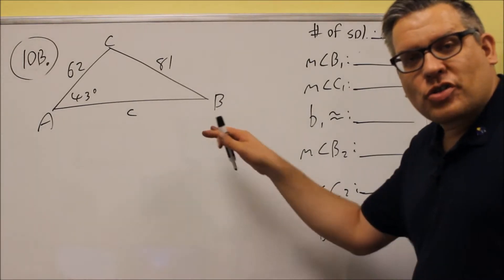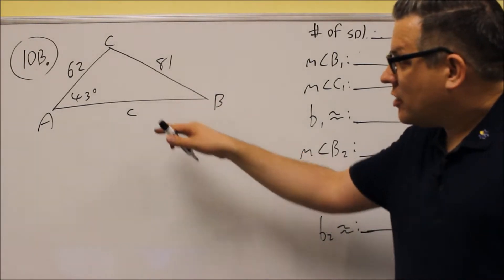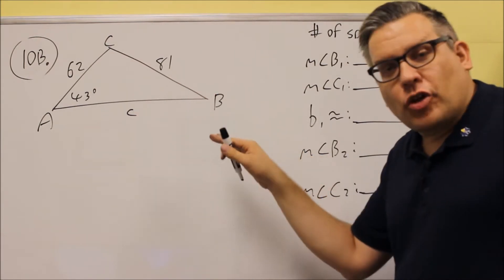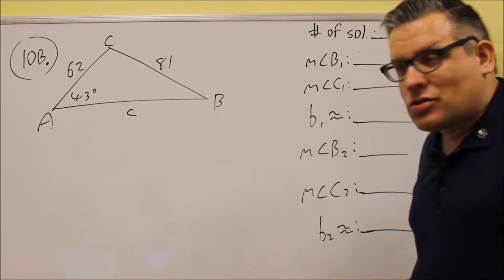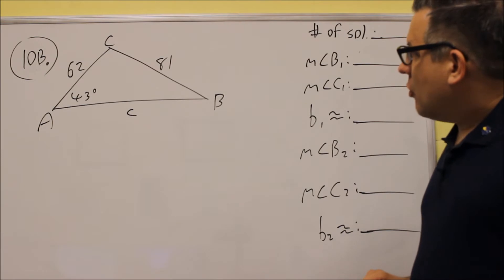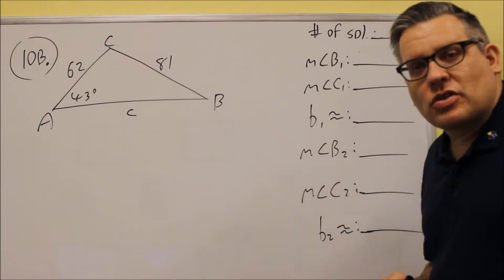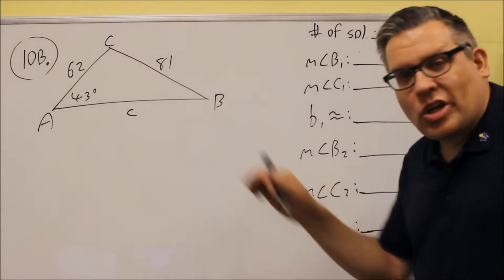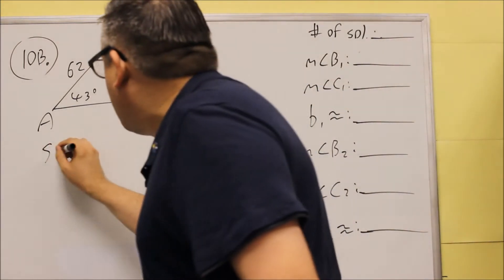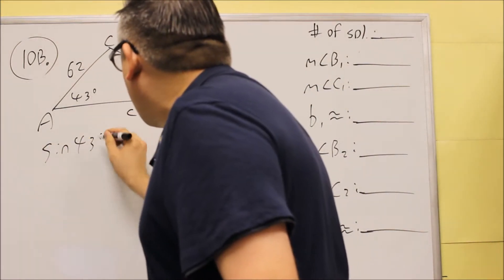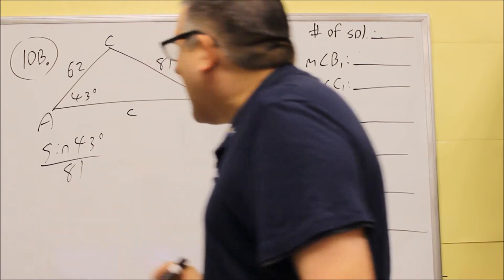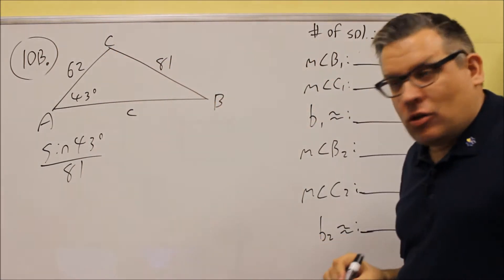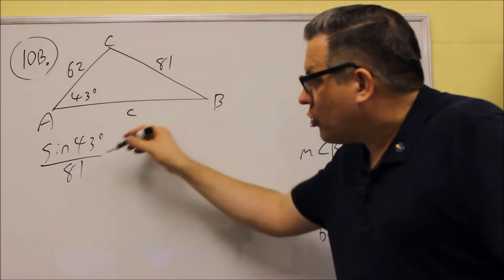For 10b, we're using the Law of Sines. So if the picture is given and we fill in the information, you're going to get this here. The first thing you want to do on these is figure out how many solutions there are. We have to set up a known ratio, so we're going to do sine of 43 degrees over 81. You always want to have the side opposite the given angle — sine of 43 over 81.